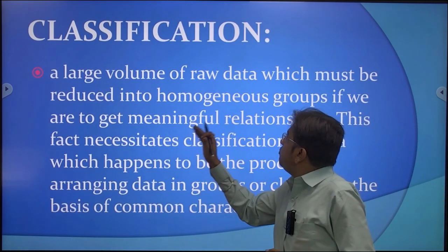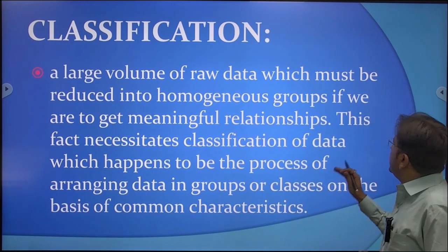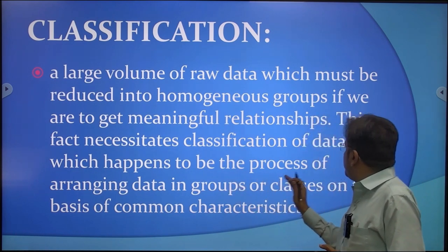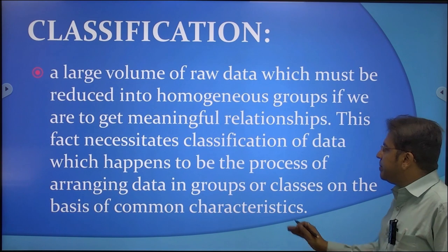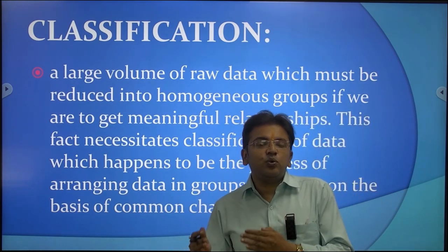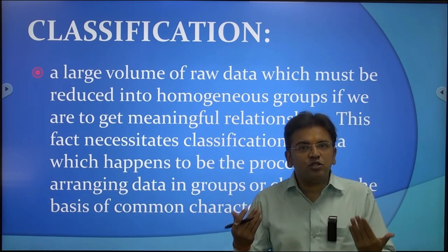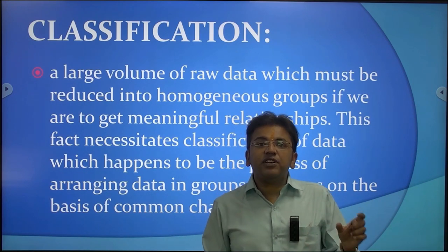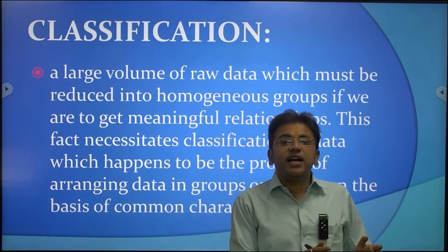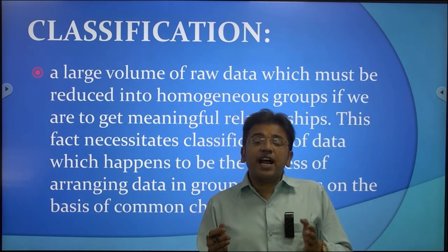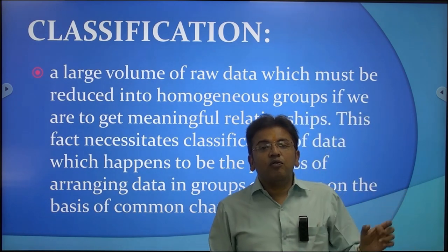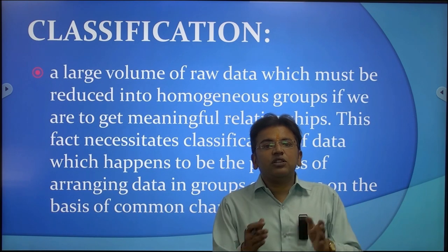Classification involves reducing a larger volume of raw data into homogeneous groups to get meaningful relationships. This necessitates classification, which is the process of arranging data in groups or classes on the basis of common characteristics. After editing the data and coding it with different numeral values, the third step is classification — classifying the larger volume of data according to its attributes or class interval. For example, classifying by age group or gender.